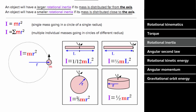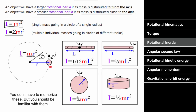For an object whose entire mass rotates at the same radius R, the moment of inertia is I = MR². This formula is not given — you must memorize it. If many masses rotate at different radii, add up each contribution. For a rod rotating about its center, I = (1/12)ML². For a rod rotating about one end, more mass is farther from the axis, so I = (1/3)ML².